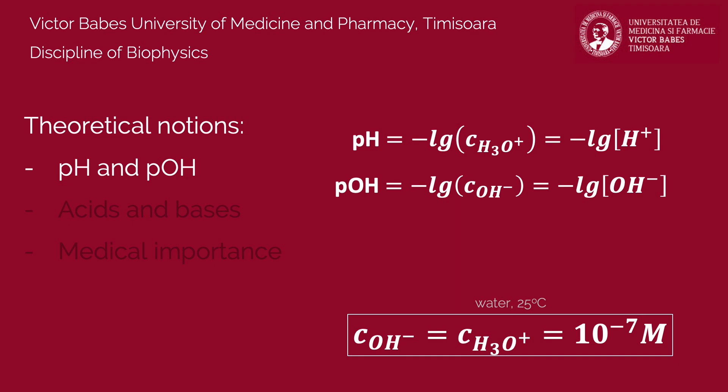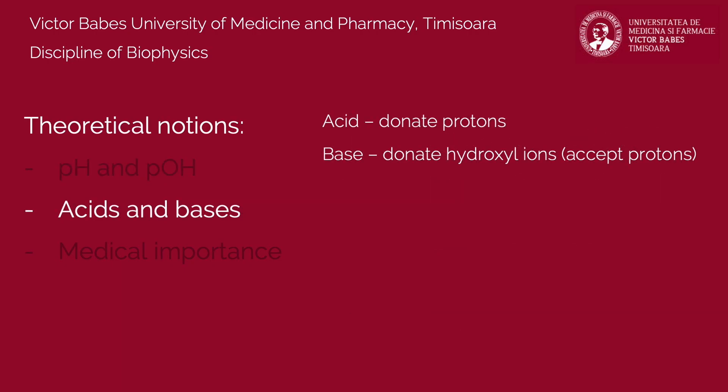Thus, at 25 degrees Celsius, the relation between pH and pOH of water becomes pH plus pOH equal 14. Acids are substances that are capable of donating protons, while bases are chemical species capable of accepting protons. Thus, adding acids or bases to solutions leads to changes in their pH.